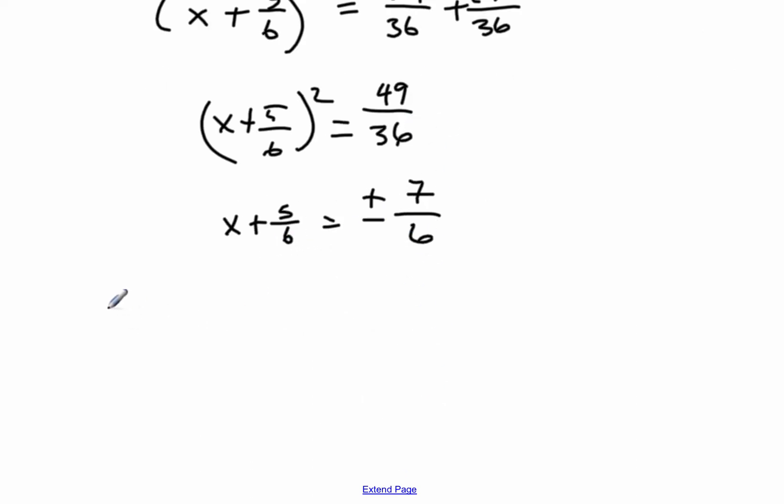Now I've got two equations. So x plus 5 sixths equals a positive 7 sixths, or x plus 5 sixths, equals a negative 7 sixths.